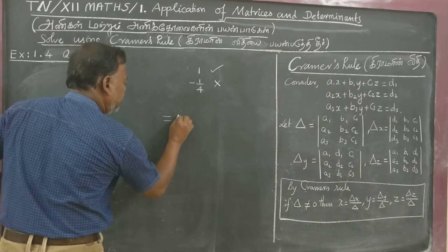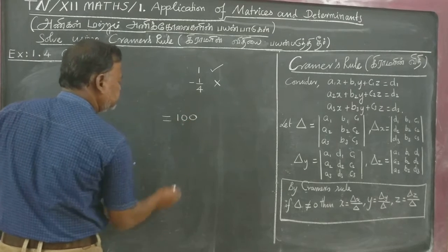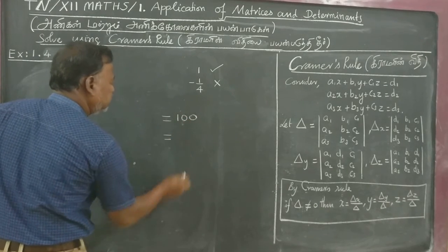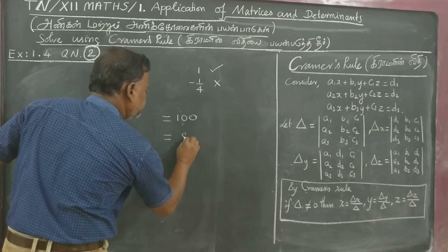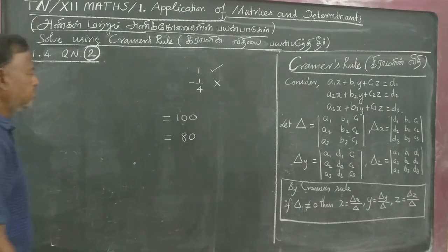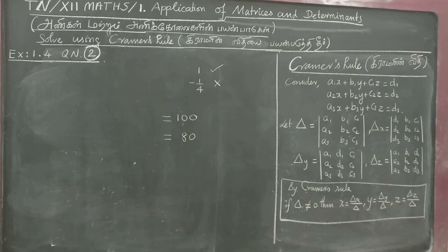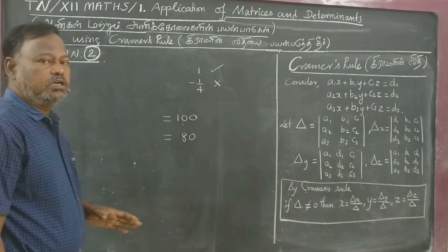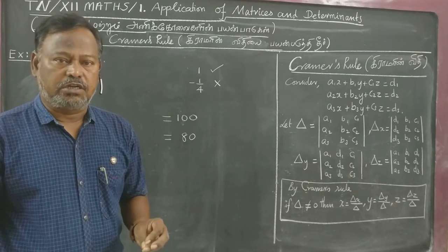He answered 100 questions and got 80 marks. He answered 100 questions and got 80 marks. How many questions are correct?